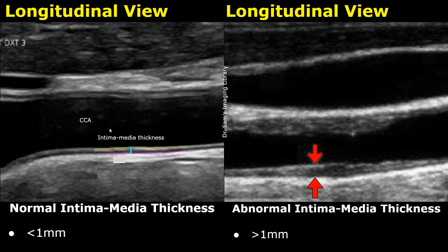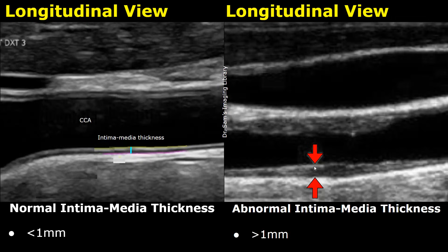Here is a longitudinal image of the common carotid artery showing the normal intima media thickness. The normal intima media thickness is less than one millimeter. Over here we have an abnormal intima media thickness — when it is more than one millimeter, there is increased risk of atherosclerosis and thrombus formation.